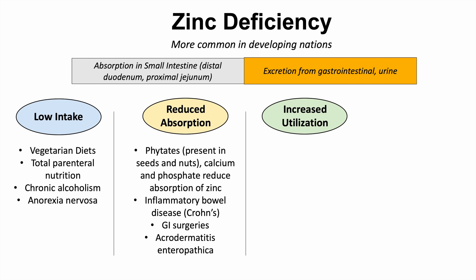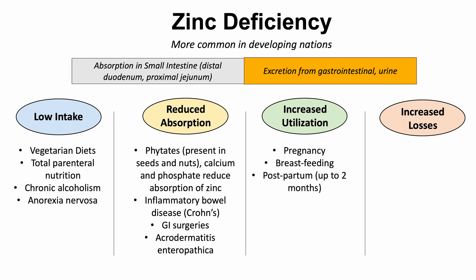Increased utilization is another cause — an individual may eat and absorb enough zinc but utilize more than they take in. This often involves pregnancy, breastfeeding, and the postpartum period up to two months after childbirth. Increased losses also cause deficiency, through diarrhea, urine losses, hemodialysis, and skin losses from burns.